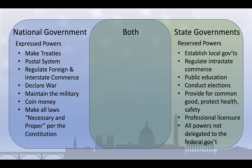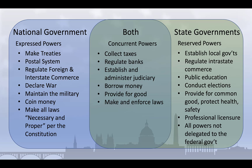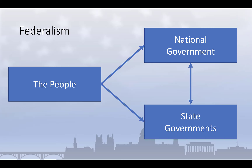And finally, there's a third group of powers that are shared by both the federal and state governments. Because of this, they're sometimes referred to as concurrent powers. This category includes a variety of activities, such as collecting taxes, borrowing money, making and enforcing laws, and establishing a judiciary. Under a federal system, both the national and state governments have independent authority. They are each responsible to the people, and they are forced to cooperate and share powers in many areas.